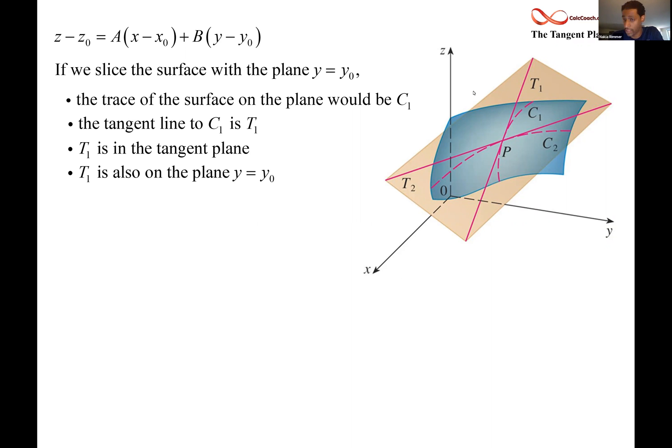The point y equals y naught, that's on the tangent line, it's on the tangent plane. And so if we take the equation, the generic equation there in the left corner at the top of the page, and we plug in y equals y naught, we'll end up being able to find the equation of that tangent line.